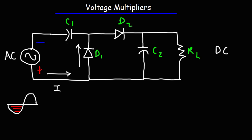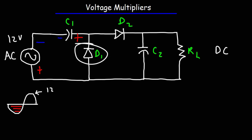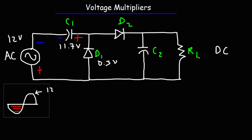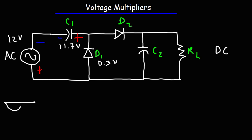So that's it for the negative half cycle. Once C1 has been charged, this side is now positive and this side is negative. Let's say the sine wave has a peak voltage of 12 volts — that's the maximum voltage. And let's say we're using a germanium diode with a voltage drop of 0.3 volts. So 12 minus 0.3 means the maximum voltage across C1 will be 11.7 volts.